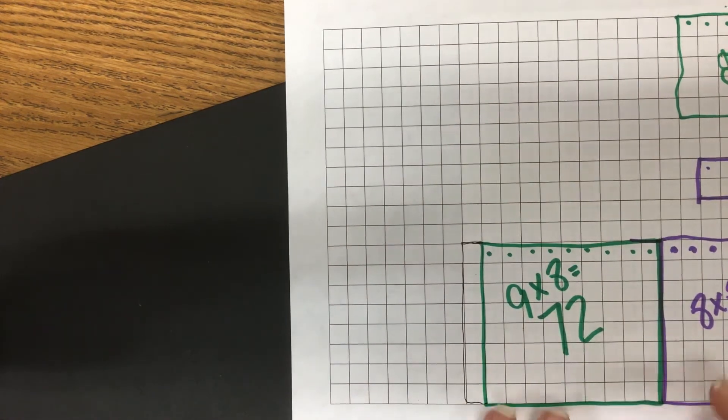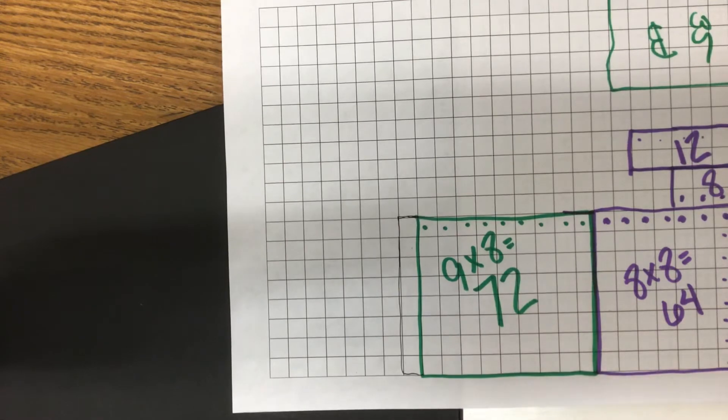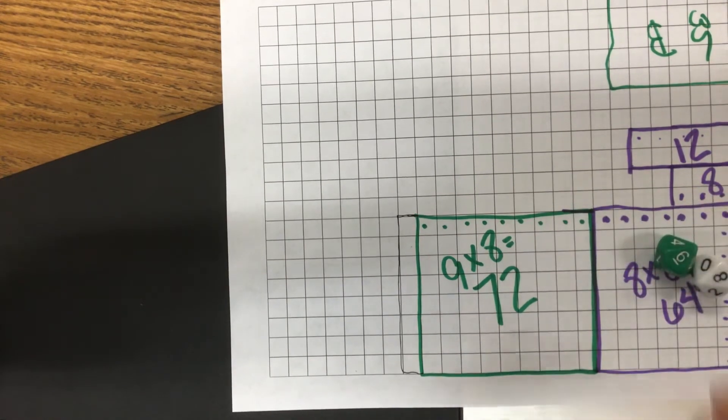Great. So that's the easy way to do your nines: do your tens and then take them away. That's much easier. It is.